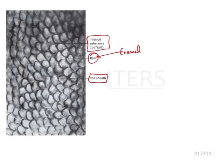This particular pattern is known as — you can see these are looking like a keyhole. So it is also known as the keyhole pattern, or we can also call it the fish scale pattern. This is the pattern of enamel rods which is seen in human enamel as well.